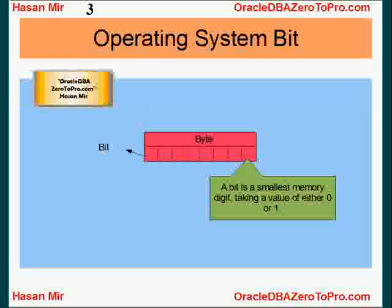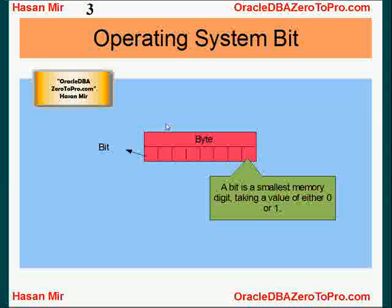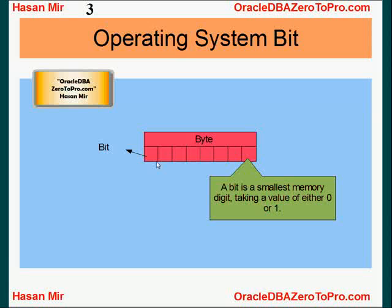Let's forget about database for a while and talk about bits. What is a bit at the operating system level? A bit is the smallest memory unit that can contain either zero or one. You can think of a bit as a small wire on the computer hardware — if there is a current in the wire then it's one, if there is no current then it's zero. That is in reality what a bit is.